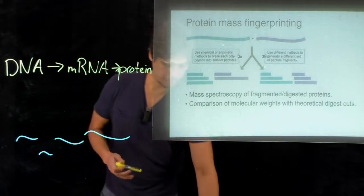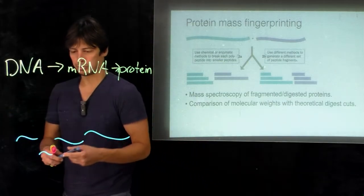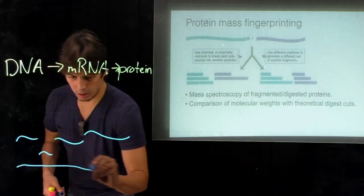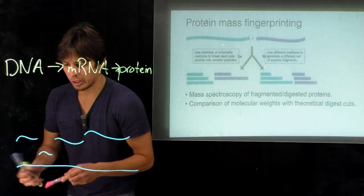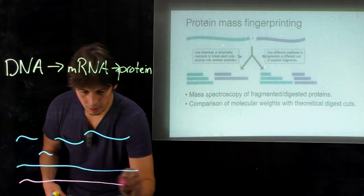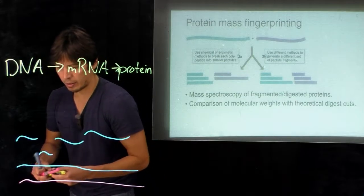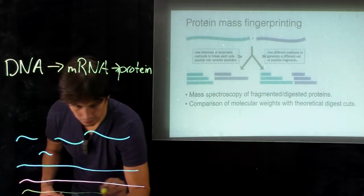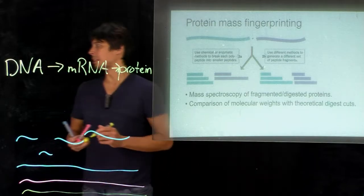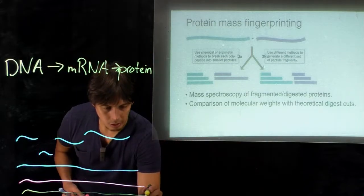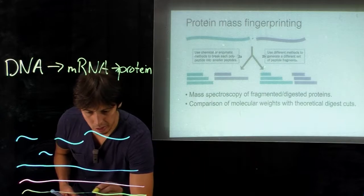So we can look for different candidates within the genome, and we can do a hypothetical cleavage of each of these with either, for instance, trypsin or cyanogen bromide.